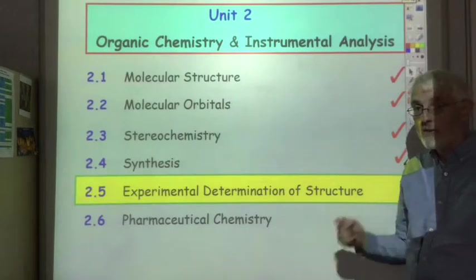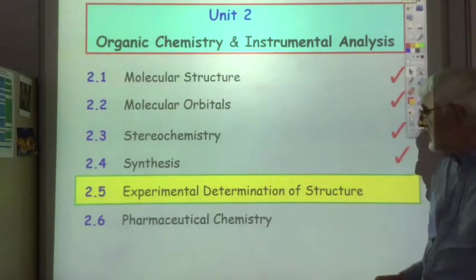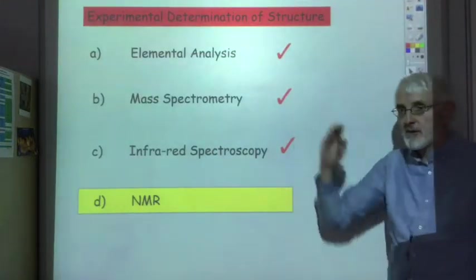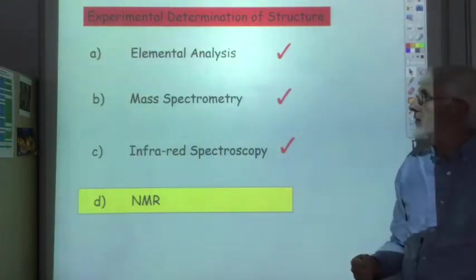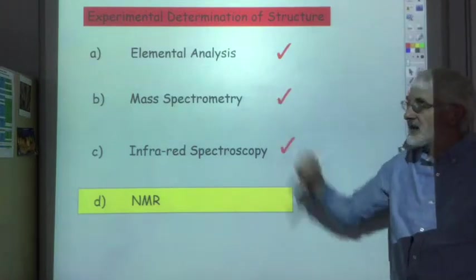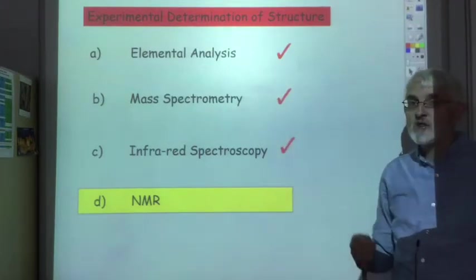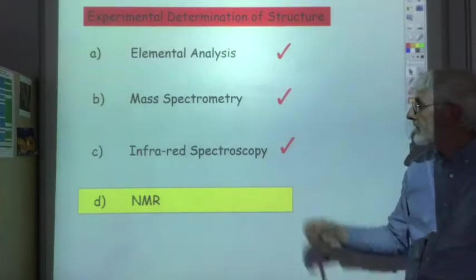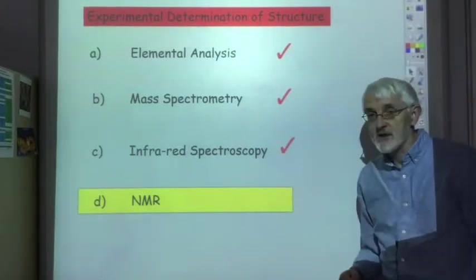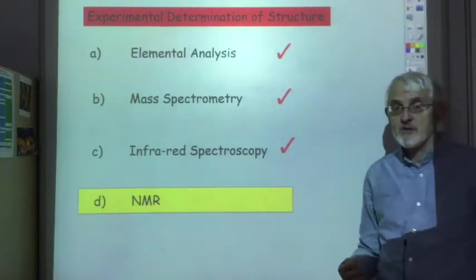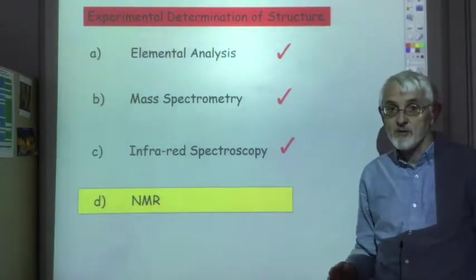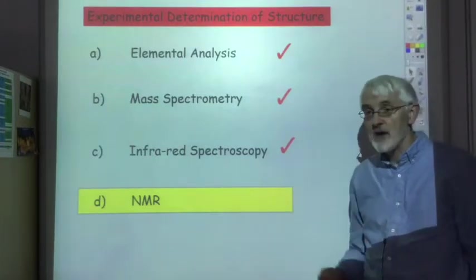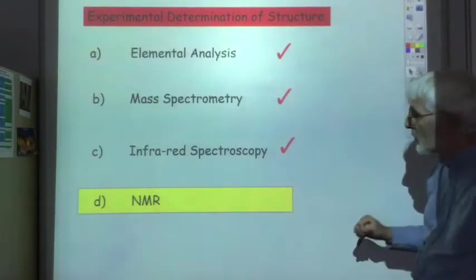We're going to continue talking about the experimental determination of structure. We've done elemental analysis from which we get empirical formula, and from mass spectrometry we can change that empirical formula into a molecular formula and get some structural information. From IR spectroscopy we get more structural information, particularly with regard to functional groups like C double bond O's, OH's, etc. Finally we're going to look at nuclear magnetic resonance or NMR.